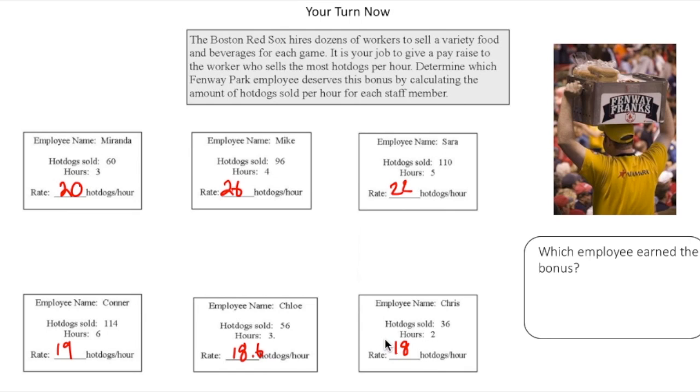So the winner of the award or the bonus is Mike because Mike sold the most hot dogs per single hour. So the employee that earned the bonus was Mike. How'd you do?